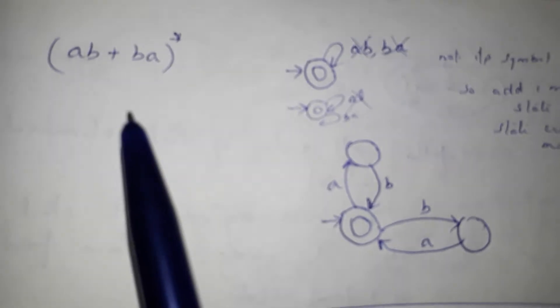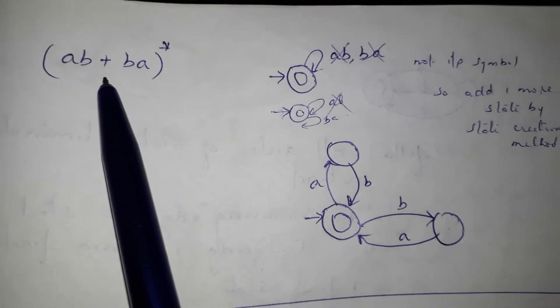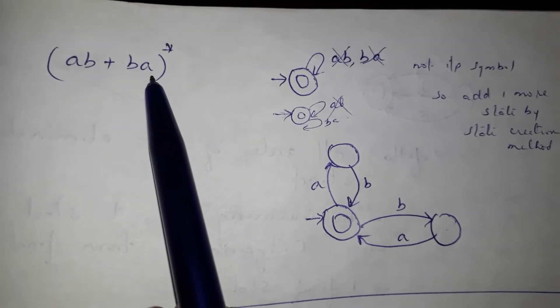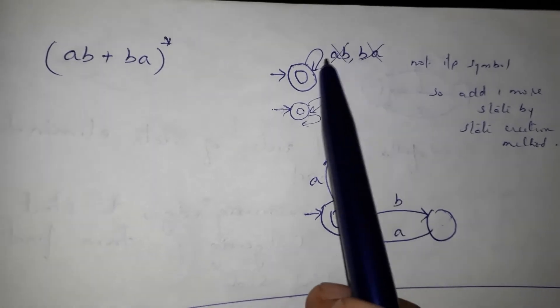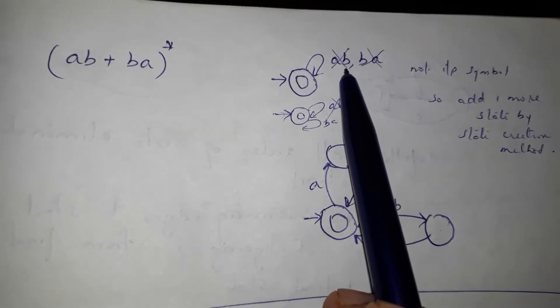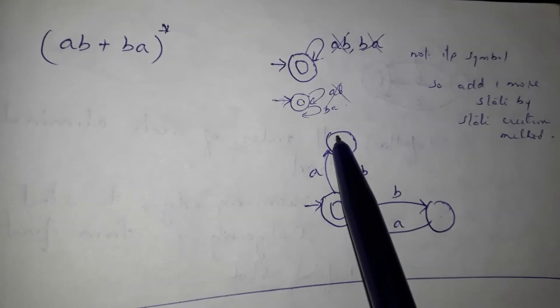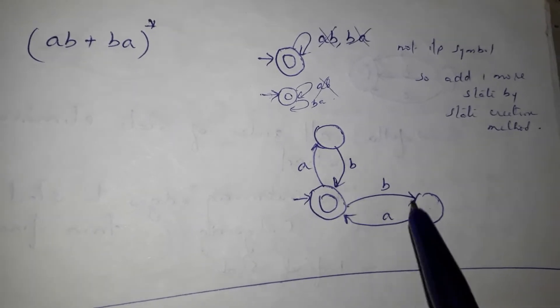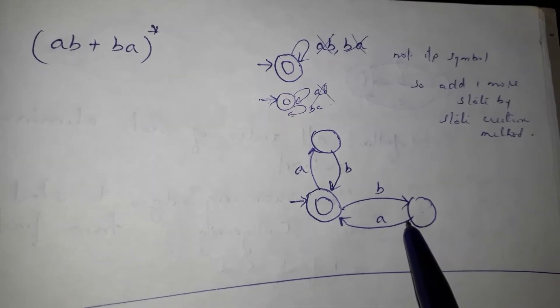Then, (AB + BA)* will be an AB-BA loop. AB and B are not input symbols, so a state will also be extra. AB is the same state, BA is the same state.